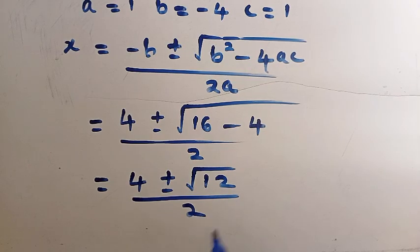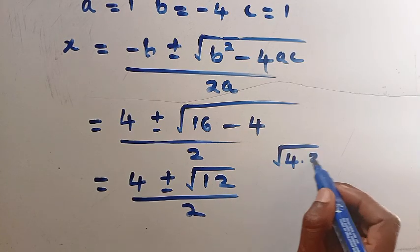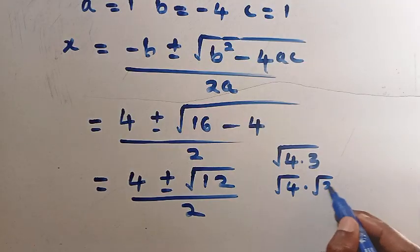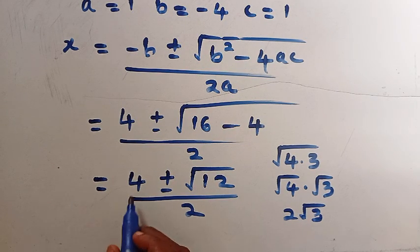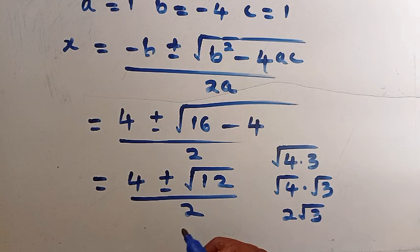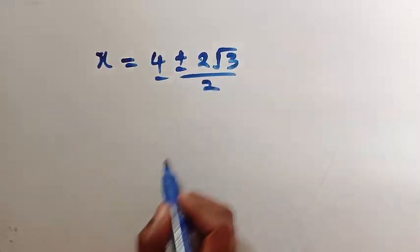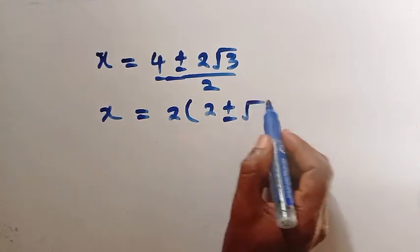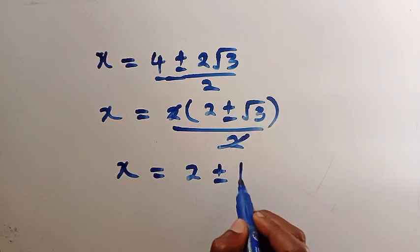Subtracting 4 from 16 we have 4 plus or minus the square root of 12, divided by 2. We can simplify square root of 12 as square root of 4 times 3, which separates into square root of 4 times square root of 3, where square root of 4 is 2. So this becomes 4 plus or minus 2 root 3, divided by 2. Factoring out 2 in the numerator gives 2 times (2 plus or minus root 3) divided by 2, and cancelling 2 gives x equals 2 plus or minus root 3.